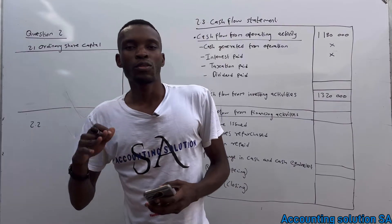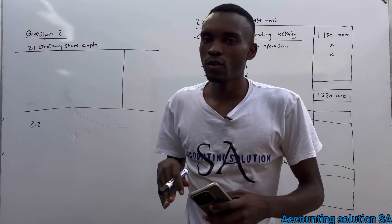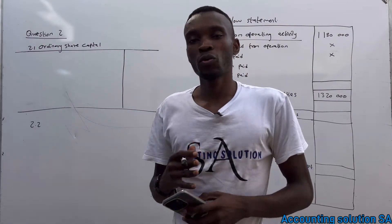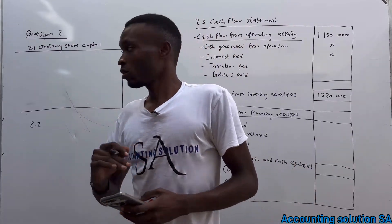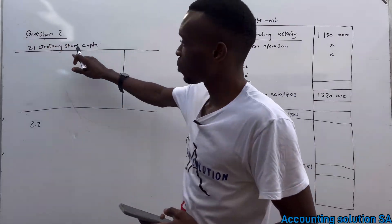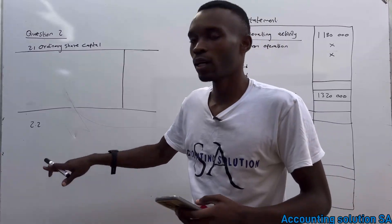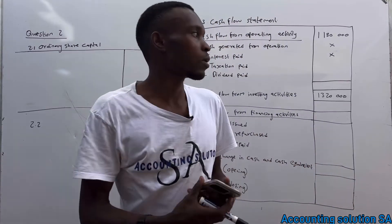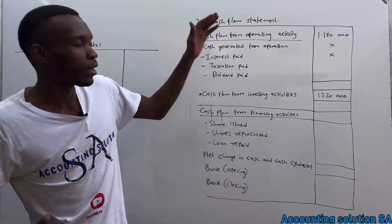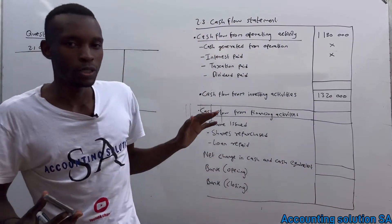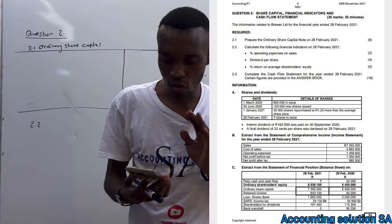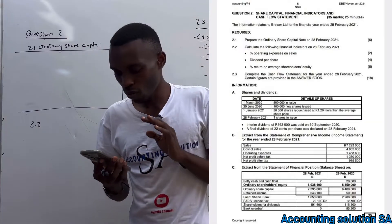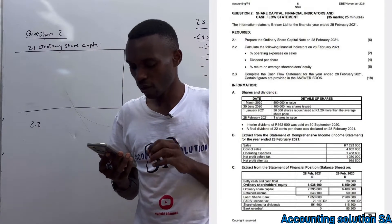Hi, great health students. In today's video we are going to do Paper 1, which includes ordinary share capital ratios as well as the cash flow statement. Let's start with our question paper.